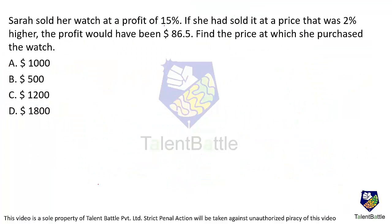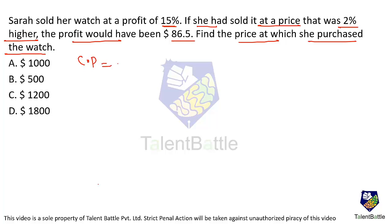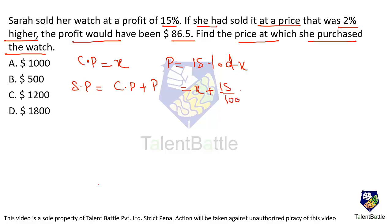Sarah sold her watch at a profit of 15%. If she had sold it at a price 2% higher, the profit would have been $86.5. Find the price at which she purchased the watch. Let the cost price be X. The selling price at 15% profit is X + 15% of X = 1.15X.